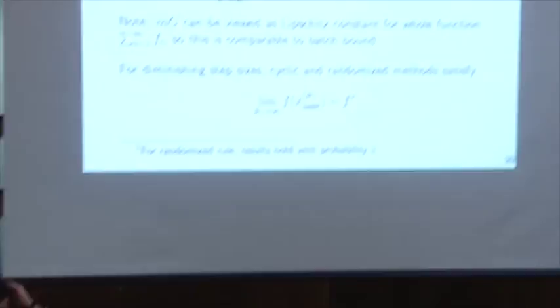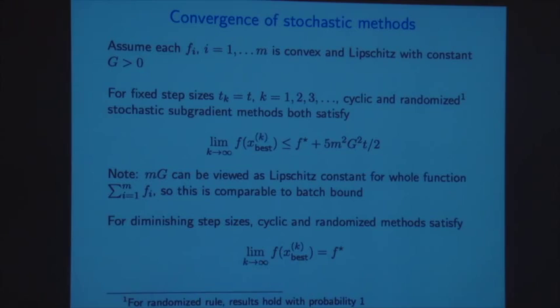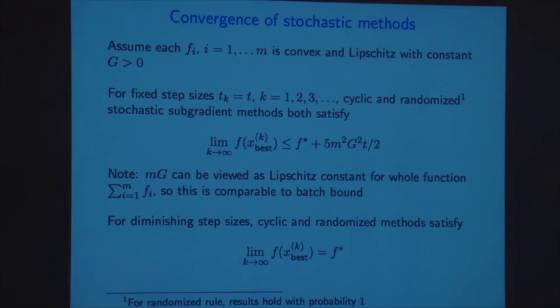The conclusion is that one cycle of stochastic subgradient updates is about the same as one iteration of a batch update, and the same is true with the randomized rule. The progress shouldn't be much worse if we take M stochastic steps versus one batch step, which is good since computationally it's the same. What we gain with stochastic steps is that we don't have to store all M functions in memory — we can just pull them out as needed.